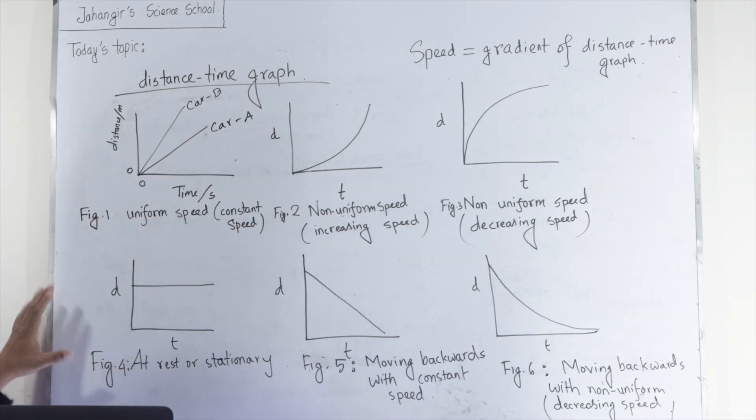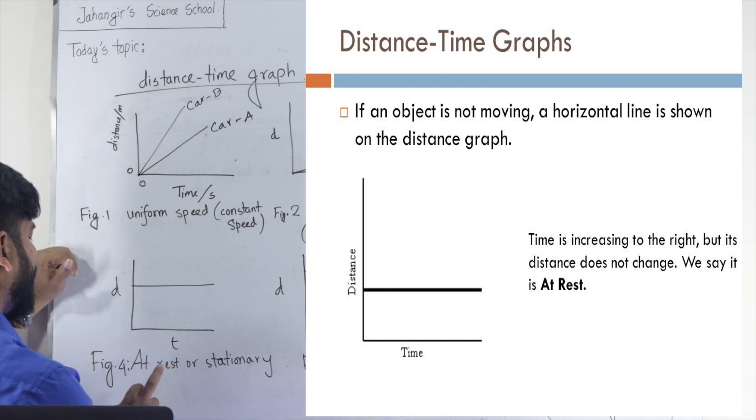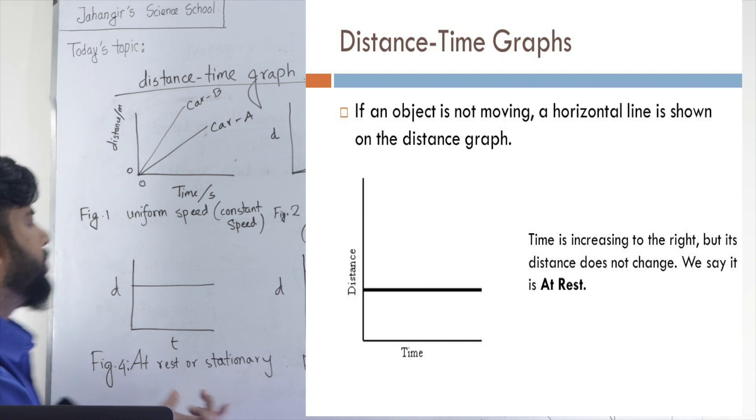This graph is very interesting. Here, time continuing, but distance does not change with time. That's why when distance time graph is a horizontal straight line with time axis, that means it shows the object is at rest or stationary.